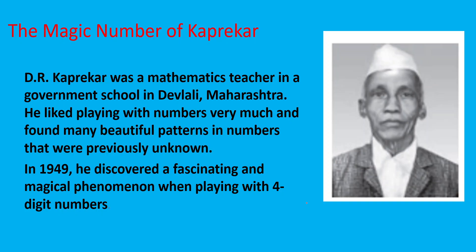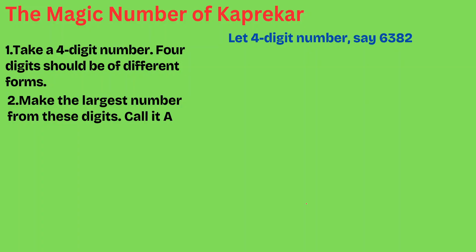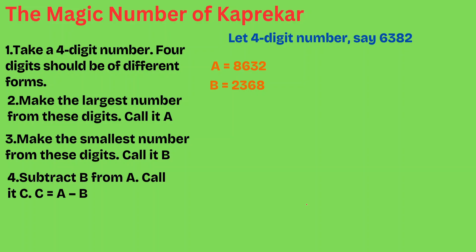The magic number of Kaprekar: let us take a four-digit number whose four digits are all different. Let us take 6,382. Make the largest number from these digits — call it A. So A = 8,632. Make the smallest number from these digits — call it B. So B = 2,368. Subtract B from A, call it C. Therefore C = 8,632 − 2,368 = 6,264.